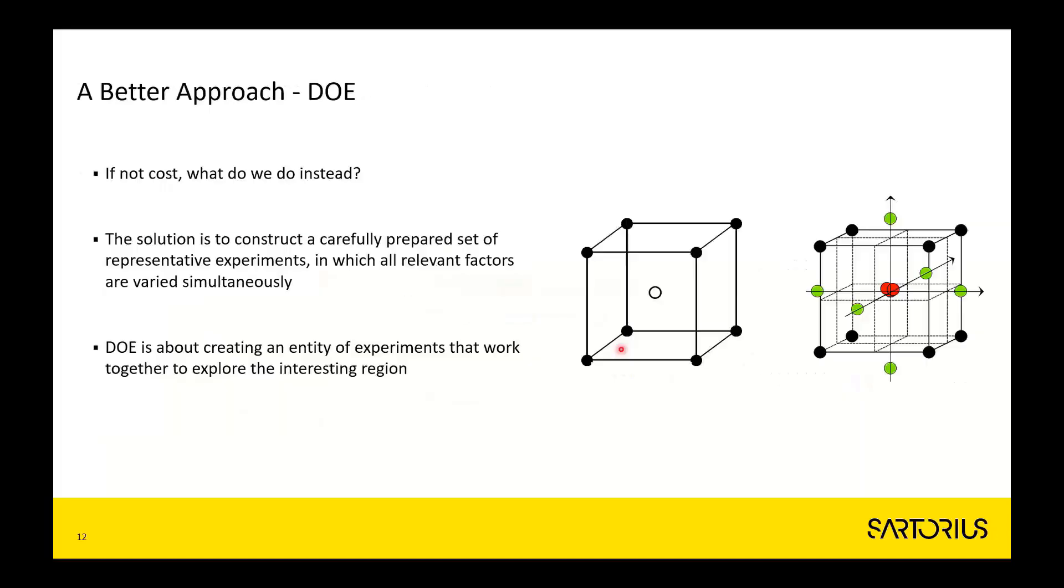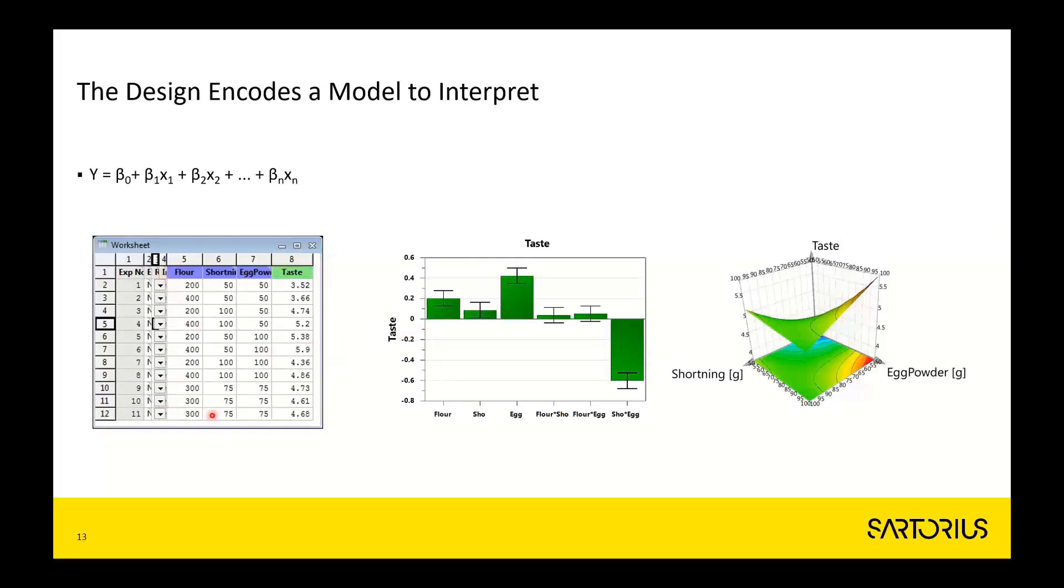The specific experimental protocol you're doing is then supporting a certain regression model, and the way the experiments have to be performed is encoded by what we call a worksheet. In the beginning, the response column, or the critical quality attribute as it is commonly known, is empty. You do the experiments and you evaluate statistically using rigid statistical analysis, and you get the model. The profile of the so-called model coefficients will then indicate how the different critical process parameters combine in influencing the critical quality attribute. You may also visualize results in terms of, for instance, a response surface plot.